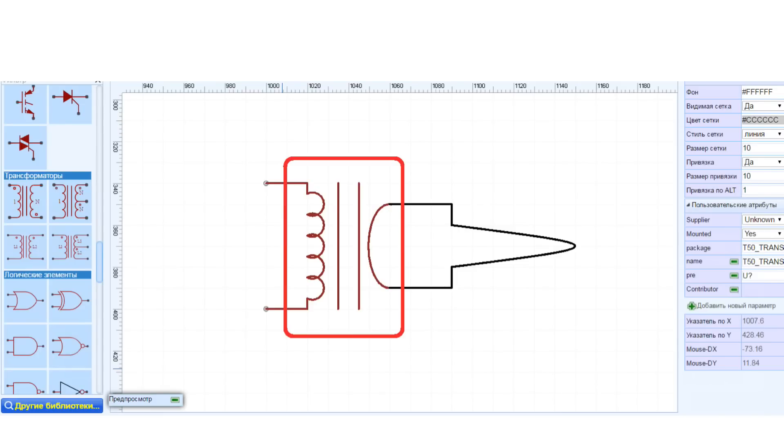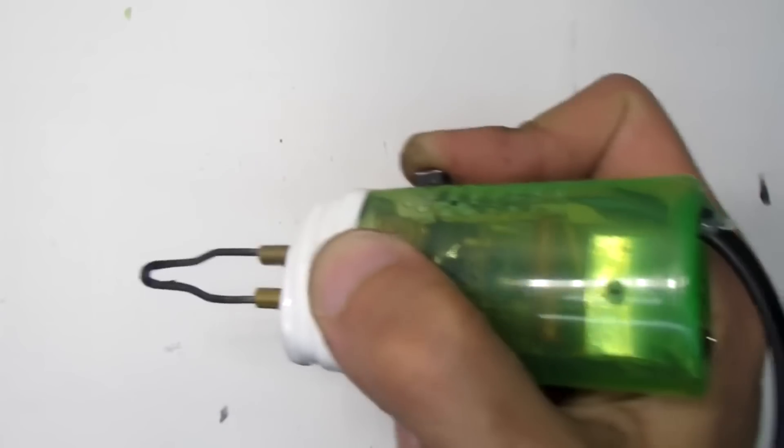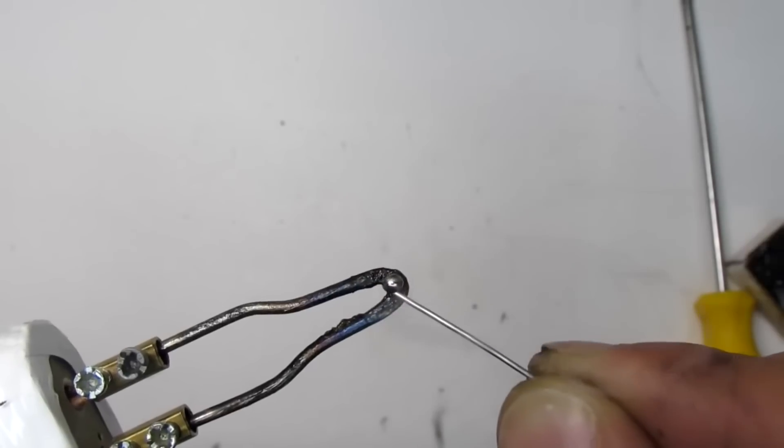These soldering irons are constructed on the basis of transformers where the secondary coil has one or two turns of thick wire. The secondary coil is enclosed with a thinner wire, which becomes a soldering tip. The tip heats because of short circuit.